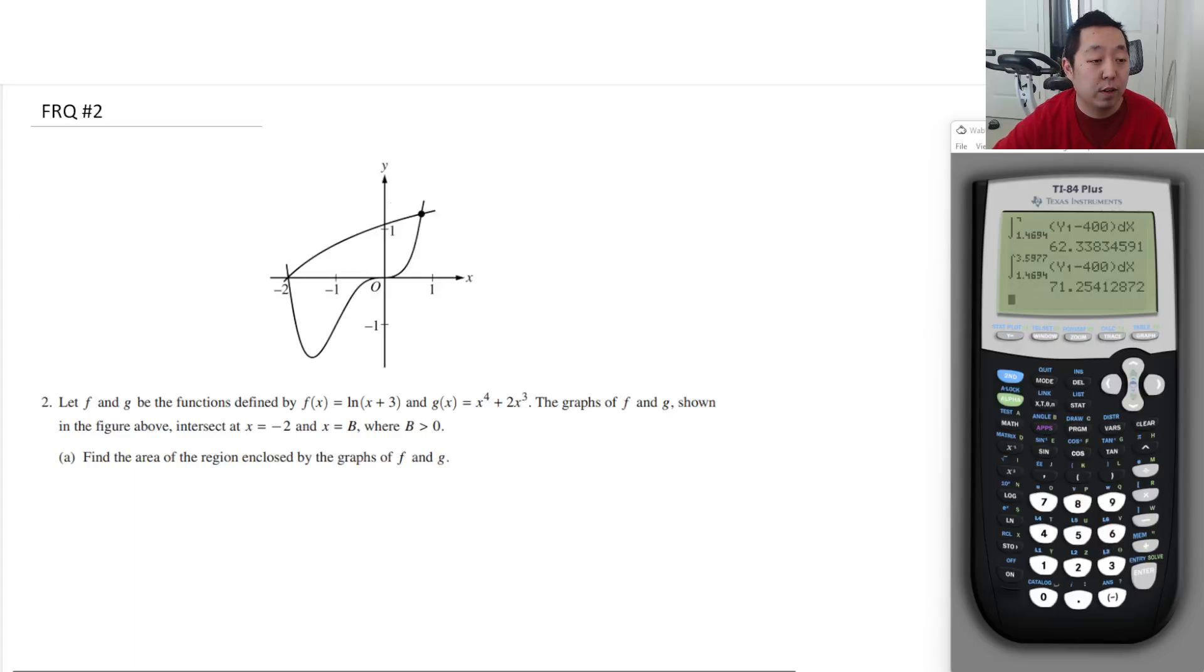Alright, here's the second FRQ. As usual, if there's any corrections I'm going to make, I'll put in the description below or in a pinned comment. So let f and g be functions defined by this. Which is which? This is still a calculator question, by the way. This is definitely my ln function, right? I always like to label them.